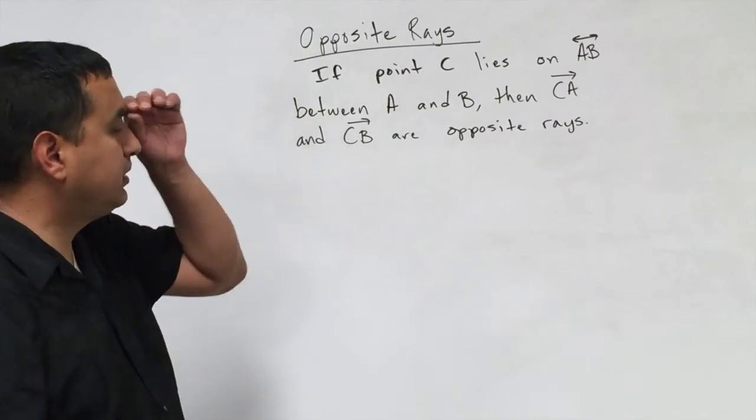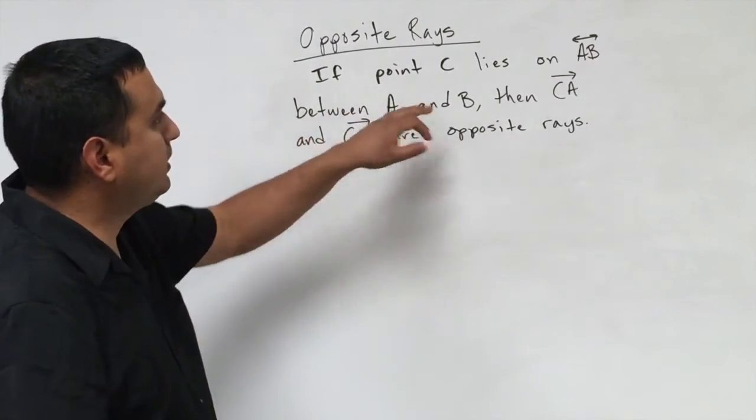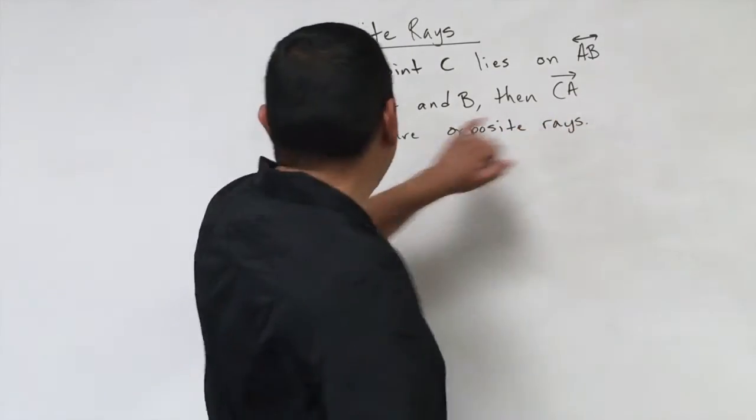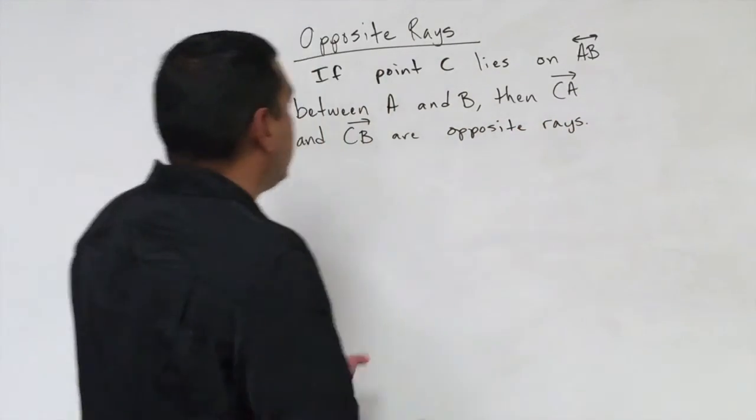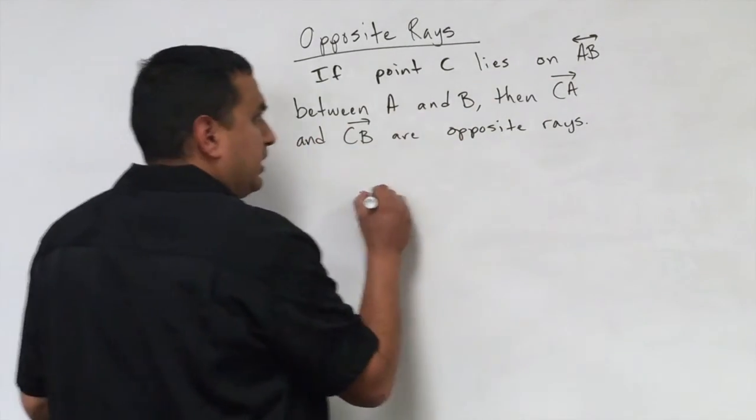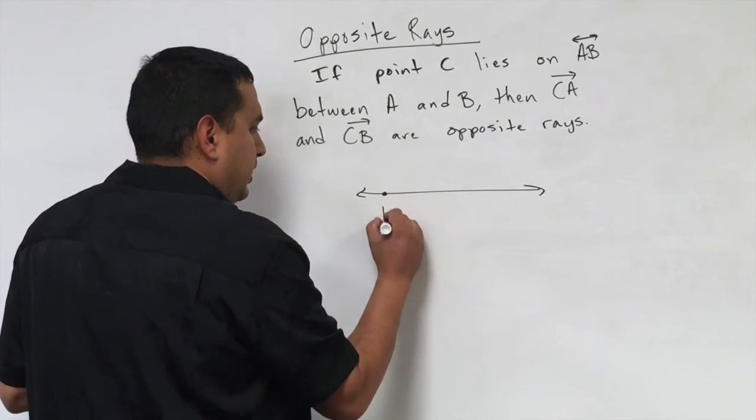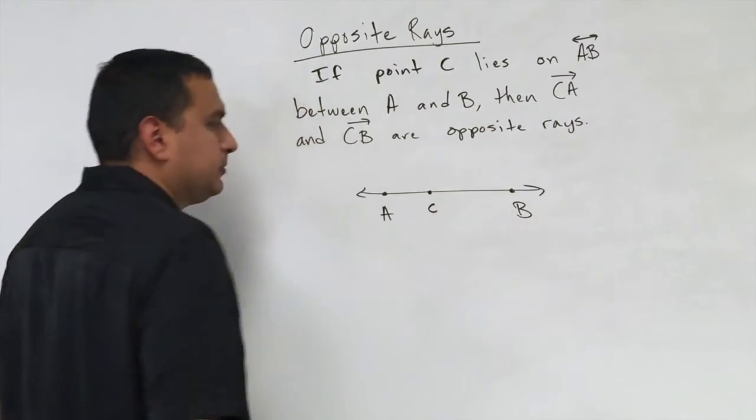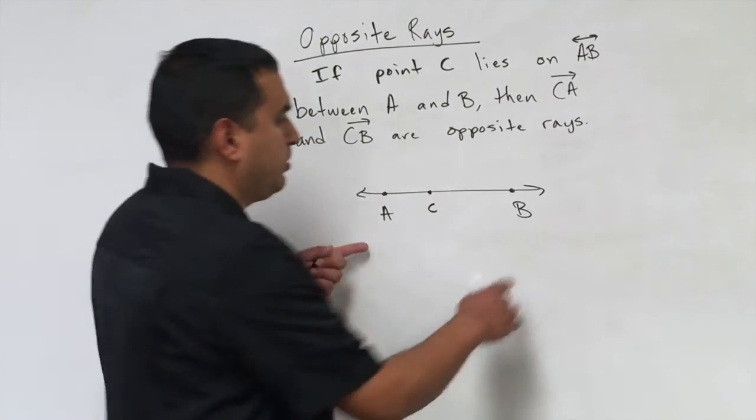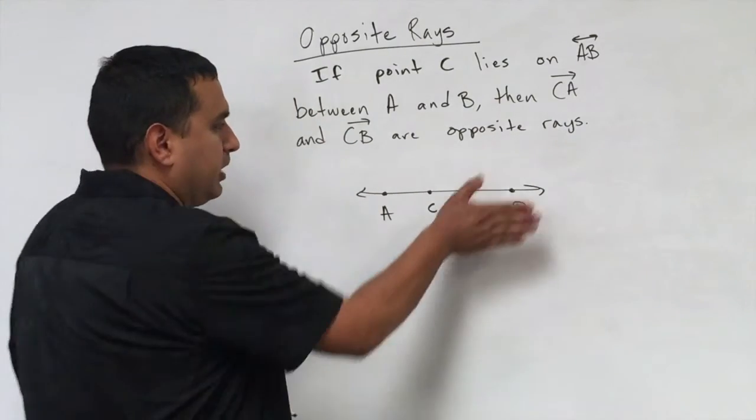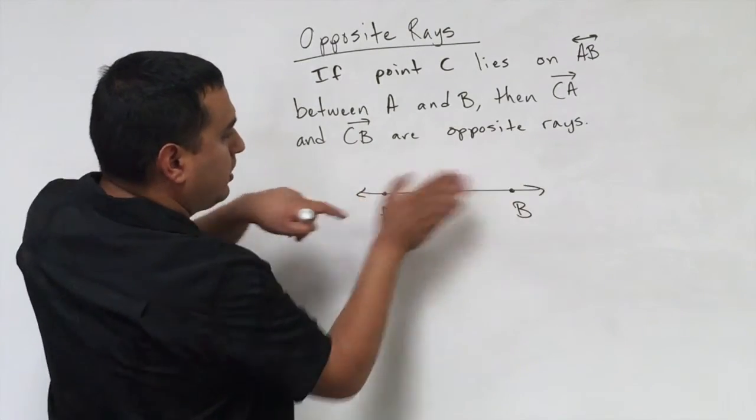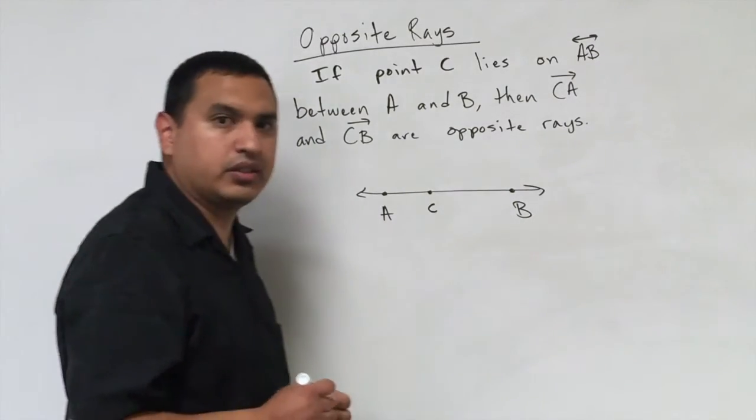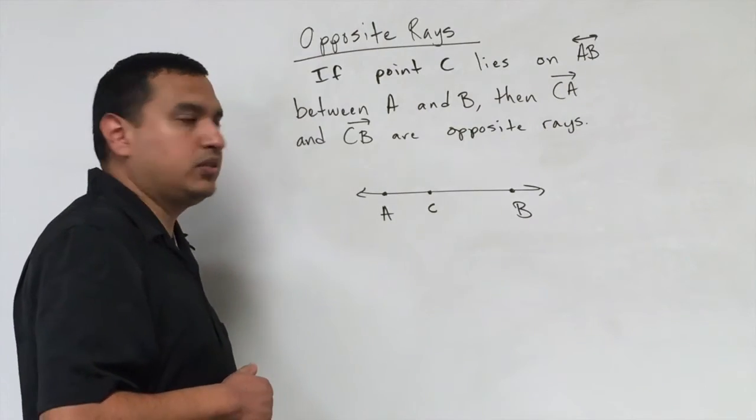Now we have opposite rays, and the definition of this is if a point C lies on line AB, so we're starting to use the notation between A and B, then ray CA and ray CB are opposite rays. So what this tells you, this first part, is you have this line segment, or this line, excuse me, A is on one side, B is on the other side, and C is somewhere between them, not necessarily in the middle. So what happens if C is between these two, I create two opposite rays. So if I cover this up, I have a ray CA going this direction, and if I go the other way, I have a ray CB that goes in the exact opposite direction. This will be important in later lessons. You will need to know this.